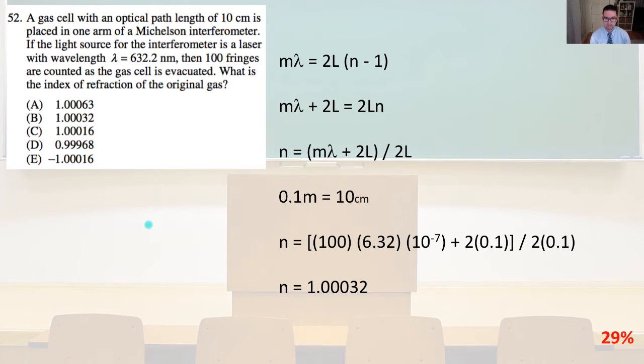And we know that 0.1 meters equals 10 centimeters. So n is going to equal 100 times 6.32 times 10 to the minus 7 plus 2 times 0.1, that whole quantity, divided by 2 times 0.1. So do some math and we are going to get n equals 1.00032. That is answer B.